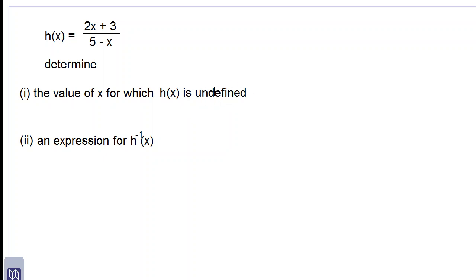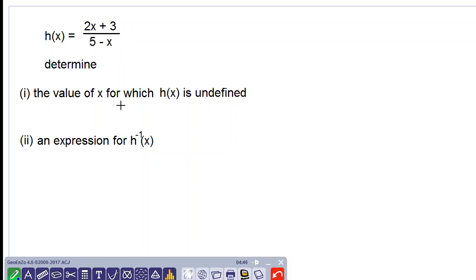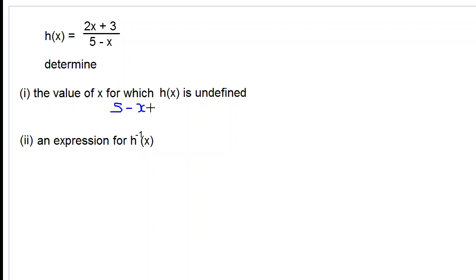Undefined means we have no answer for h of x, and that will happen if the denominator is equal to zero. So this occurs when 5 minus x is equal to zero.